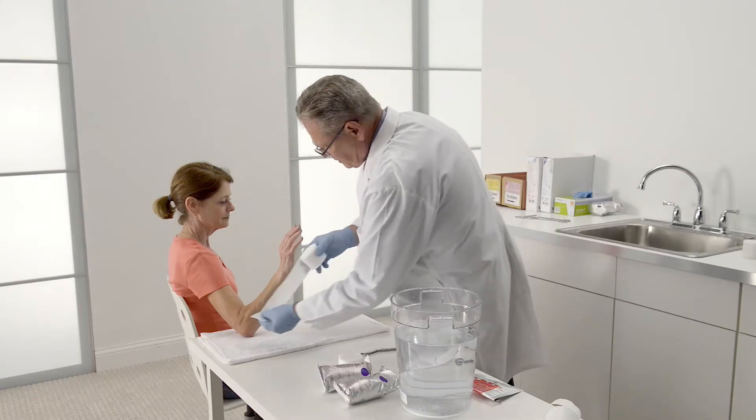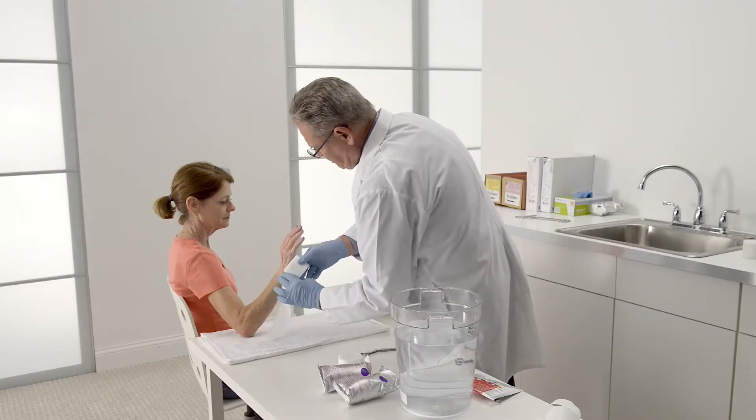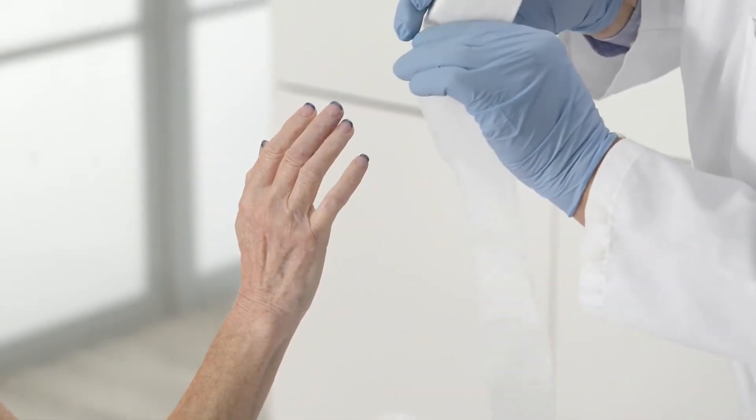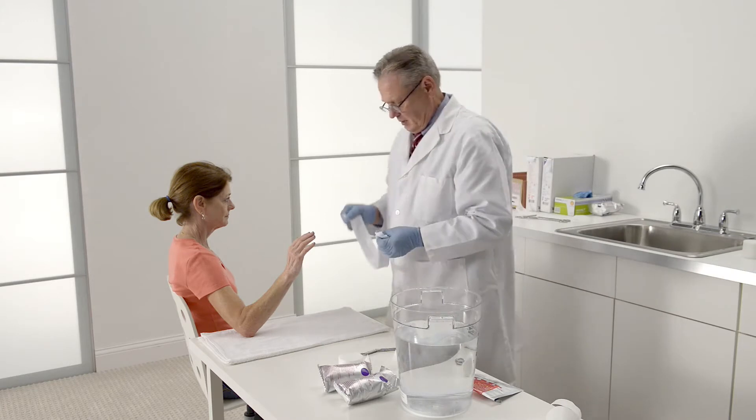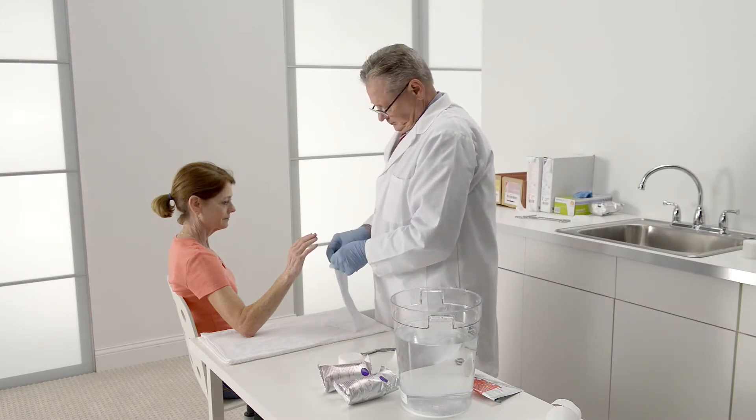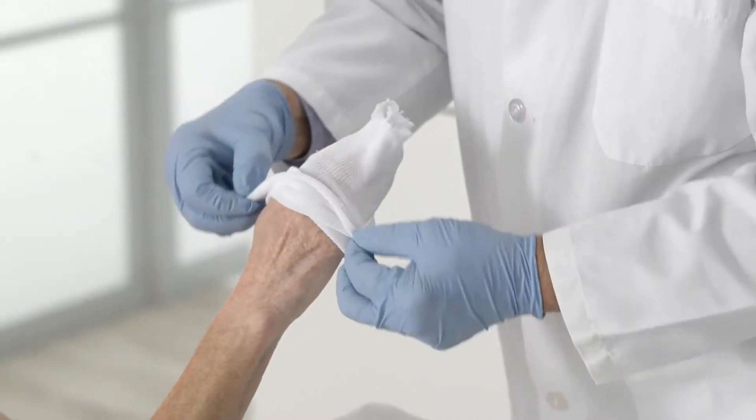First, cut the 3M synthetic cast stockinette long enough to extend from the patient's fingertips to just above the elbow, plus one-third of that total length. Remember, the stockinette becomes shorter as it widens in diameter. Roll the stockinette down the arm.